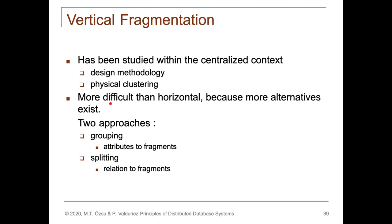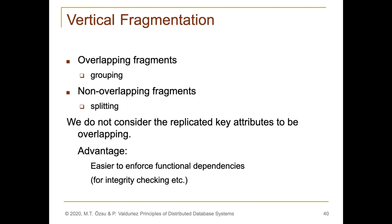There are two types of vertical fragmentation. The first one is grouping and the second one is splitting. Grouping is about categorizing or making groups of attributes with similar characteristics. For instance, in a relation called customer orders, information regarding customer personal or contact information could be categorized as one group, and information regarding orders could be categorized in a separate group. Splitting is a little bit different because here we start from relations and split columns into different sub-relations. Grouping is an overlapping technique and splitting is a non-overlapping technique.